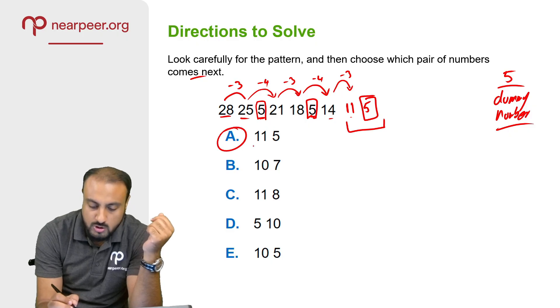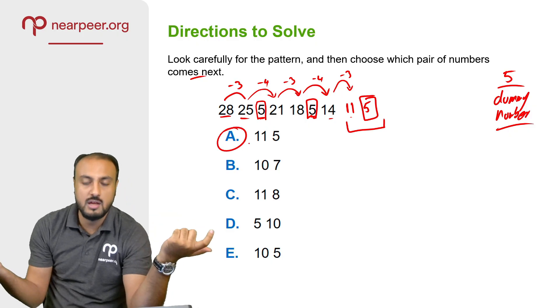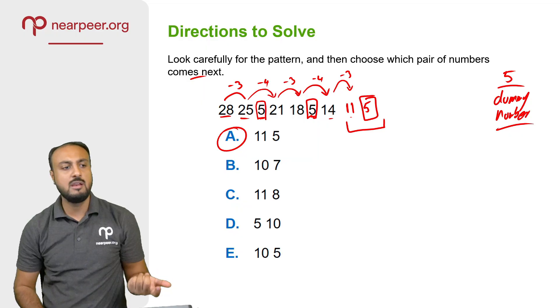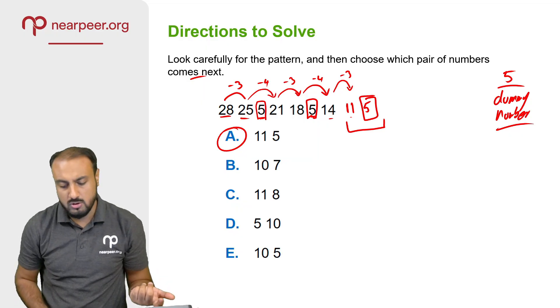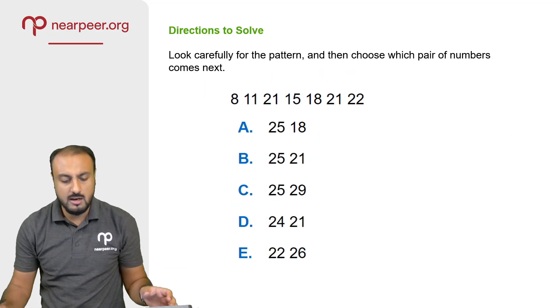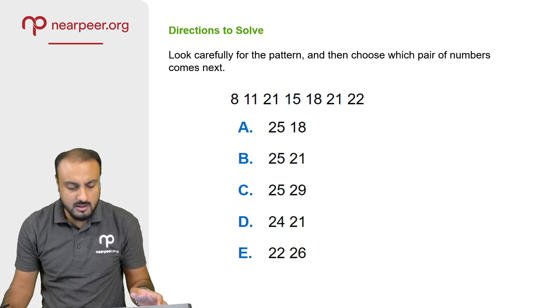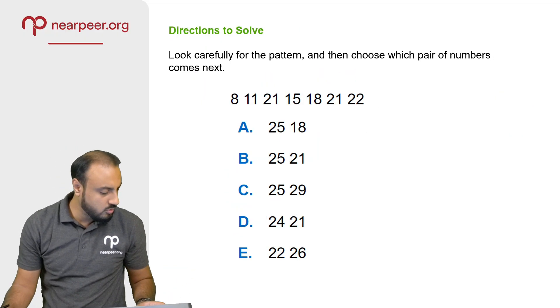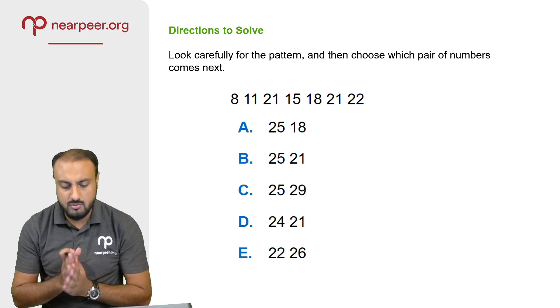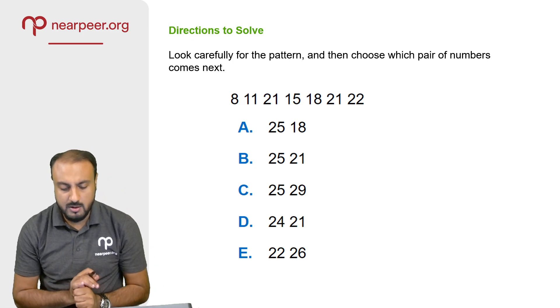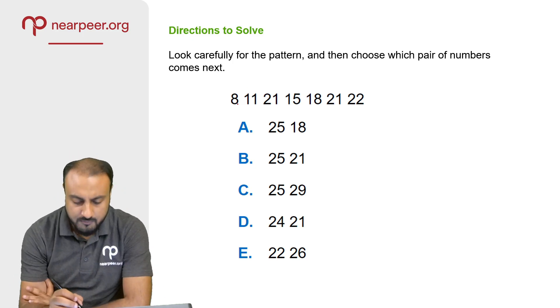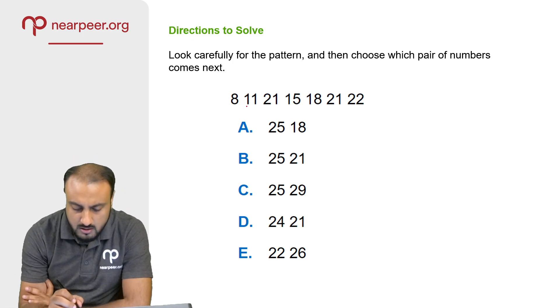The right answer is 901. It's a simple question — not rocket science. Now we'll look carefully at the next pattern. The numbers given are 8 and 11.